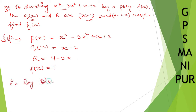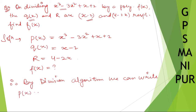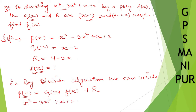Therefore, by the Division Algorithm, we can write: p(x) is equal to q(x) into f(x) — where f(x) is the divisor — plus remainder r. So x cubed minus 3x squared plus x plus 2 is equal to (x minus 2) into f(x) plus (4 minus 2x).